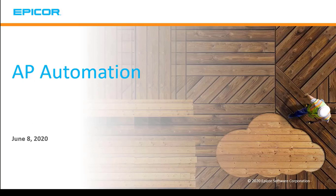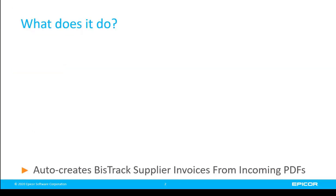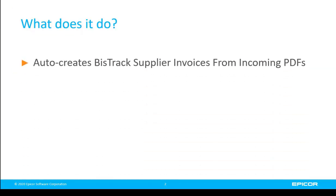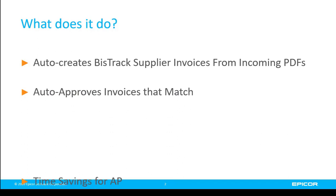Hello and welcome to this brief introduction to AP Automation. So what is AP Automation and what does it do? AP Automation auto-creates BizTrack supplier invoices from incoming PDFs and it can auto-approve invoices that match. This results in significant time savings for the AP department.